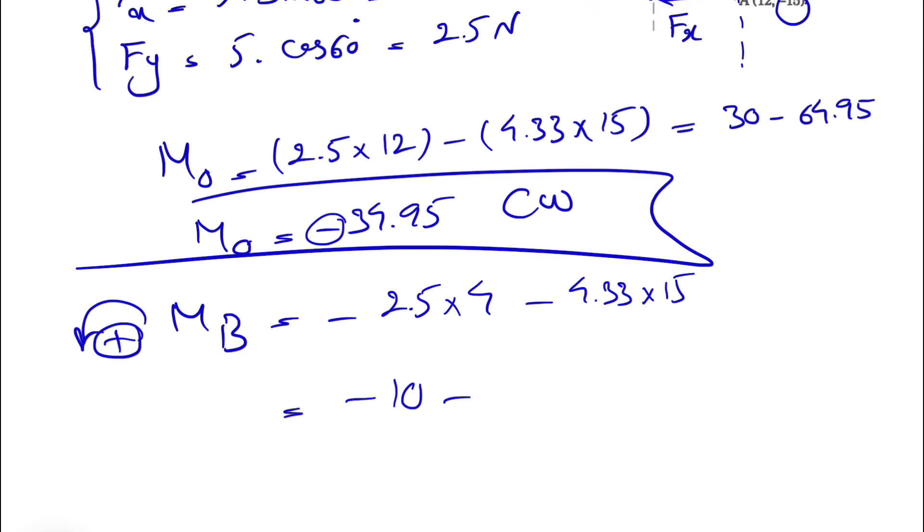Basically, 2.5 times 4 is minus 10, minus this is going to be 64.95. We'll get minus 74.95. Negative sign again shows it's clockwise, the direction of the moment about B. That would be the final answer for the second part of the question.